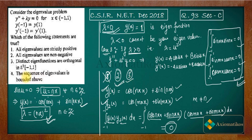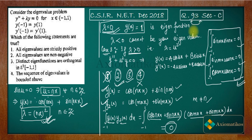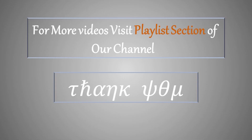Option 4 states the sequence of eigenvalues is bounded above. The eigenvalue sequence is n²π², which goes to infinity as n → ∞, so it is not bounded above — Option 4 is false. To clarify, this was actually problem 93, not 94. In conclusion, Options 2 and 3 are correct; all other options are false. For any doubts, comment below or join our WhatsApp and Telegram groups — links are in the description.